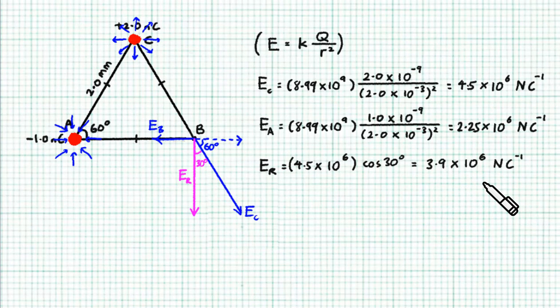To summarize, electric field strength is a vector. We use KQ over R squared to calculate the magnitude of the field strength, and we use the context of the question to figure out the directions. Then we do a vector summation to get the resultant electric field strength.